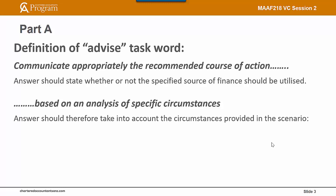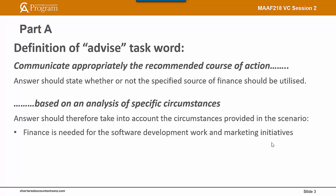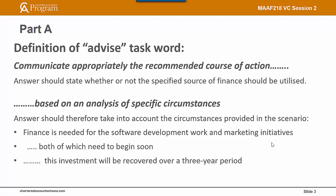The following is what the answer should take into account: that the finance is needed for the software development work and marketing initiatives, both of which need to begin soon — so the finance is needed pretty quickly. This investment will be recovered over a three-year period. And finally, the chief executive wants to retain the controlling interests.